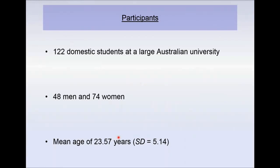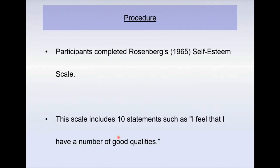We collected data from 122 domestic students at the University of Newcastle — 48 men and 74 women, around 23 years of age. The study was described as a memory task in social groups, investigating implicit learning and memory recall for people placed in positive and negative contexts. The first thing they did was complete the Rosenberg self-esteem scale, an enormously widely used measure. It consists of 10 statements with face-valid items such as 'I feel I have a number of good qualities.'